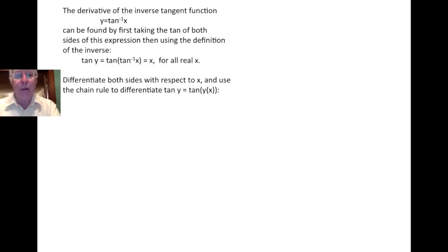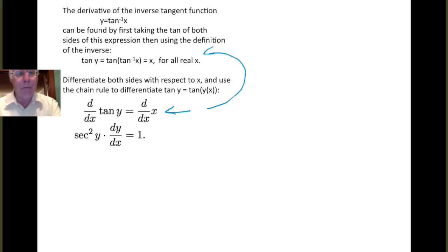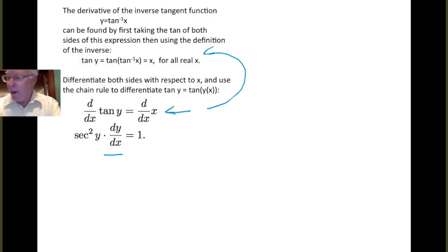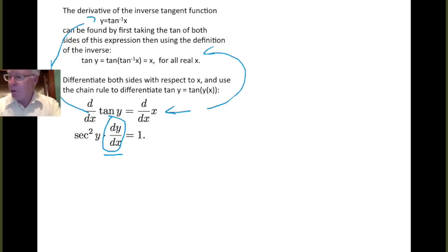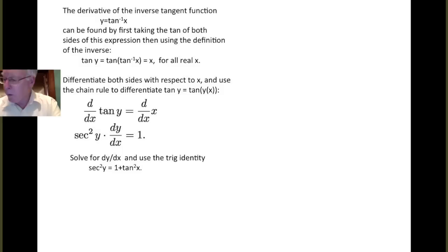We then differentiate both sides of this relationship with respect to x, thinking of y as a function of x. We get the derivative of tangent y with respect to x equals the derivative of x. We use the chain rule: the derivative of tangent is secant squared, so we get secant squared y, times dy dx by the chain rule. Our goal is to find dy dx, because y was the inverse tangent function. So we solve for dy dx by dividing both sides by secant squared y, then using the identity that secant squared y equals 1 plus tangent squared y.